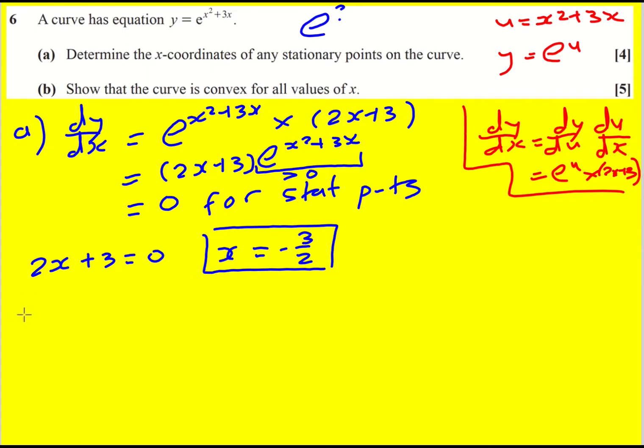Then part b, we're asked to show the curve is convex for all values of x. Convex means the second derivative is greater than 0.